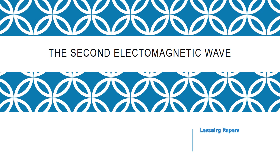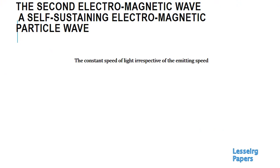As I have now been able to mathematically describe this second electromagnetic wave, I have decided to create a series of videos to show how it works and also to show its consequences. The second electromagnetic wave is a self-sustaining electromagnetic particle wave. Because it is an electromagnetic particle wave, it will actually demonstrate the same features as the electromagnetic field wave.